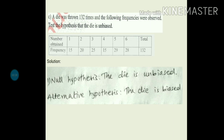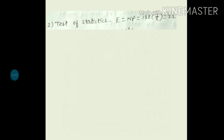Expected frequency is capital N into P. What will be N? It represents the total in this question — sum of all values, that is 132. So capital N is 132. We just need to find P. P will be probability of getting any number, so of course that is 1 by 6. Probability of getting 1, or 2, or 6 — all is same here, 1 by 6. So 132 into 1 by 6 will give expected frequency, that is 22.